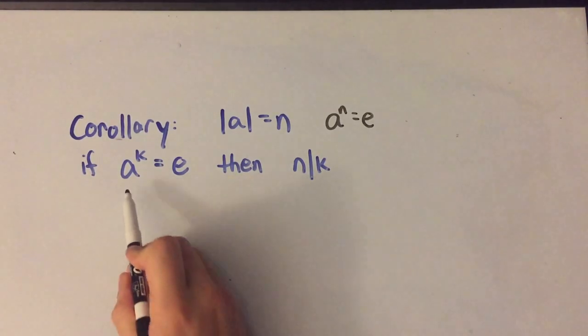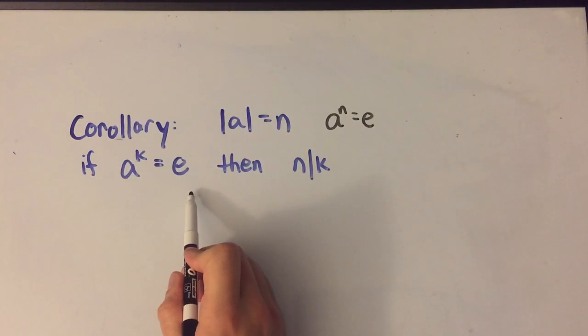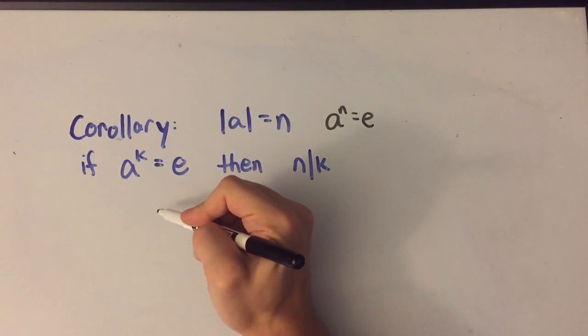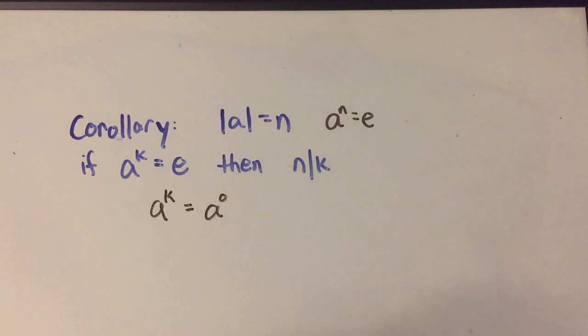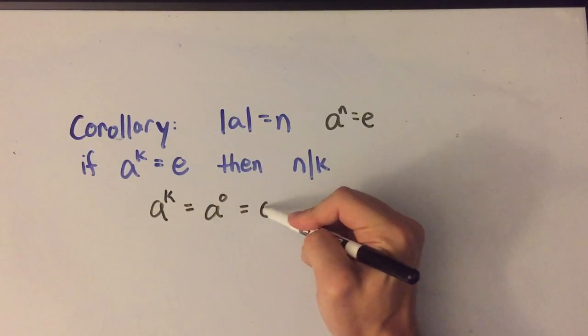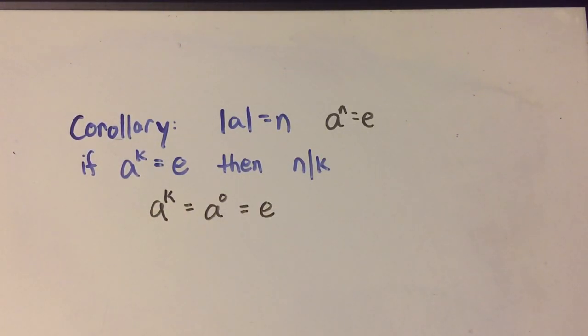Well if I assume this a to the k equals e, it's also true that a to the zero power equals the identity element, right? That's just sort of a definitional thing. So both of these equal the identity element.